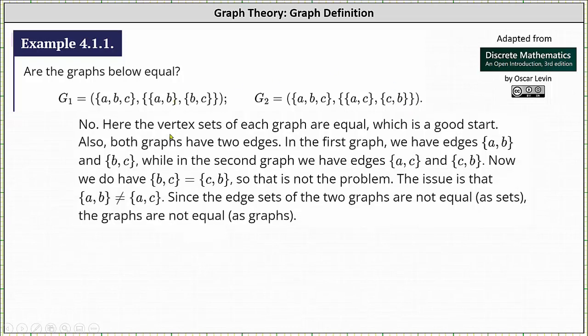These two graphs are not equal. Here, the vertex sets of each graph are equal, which is a good start. Also, both graphs have two edges. In the first graph, we have edges {A, B} and {B, C}, while in the second graph, we have edges {A, C} and {C, B}.